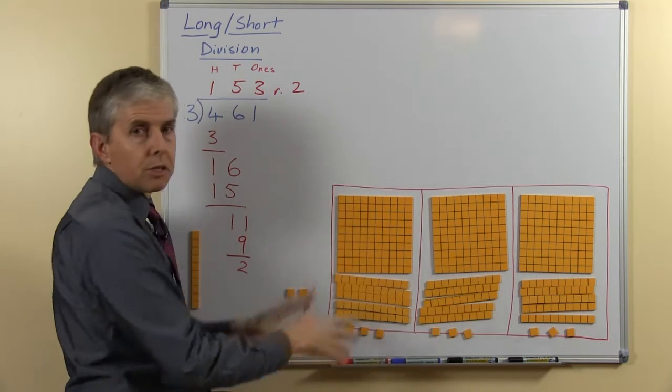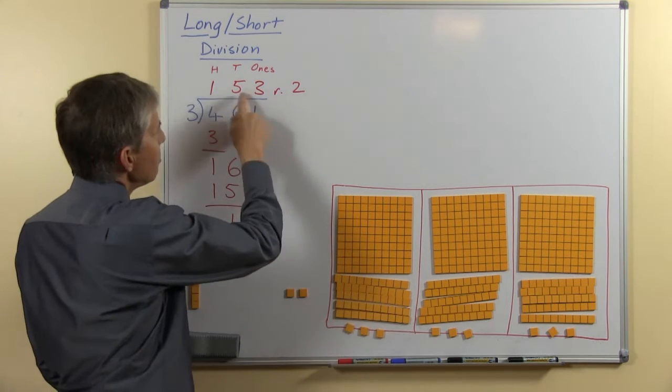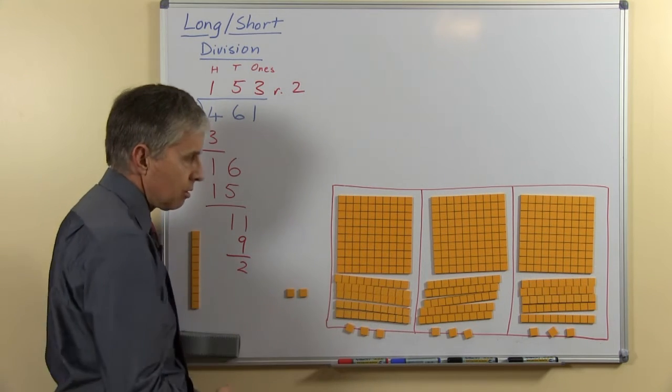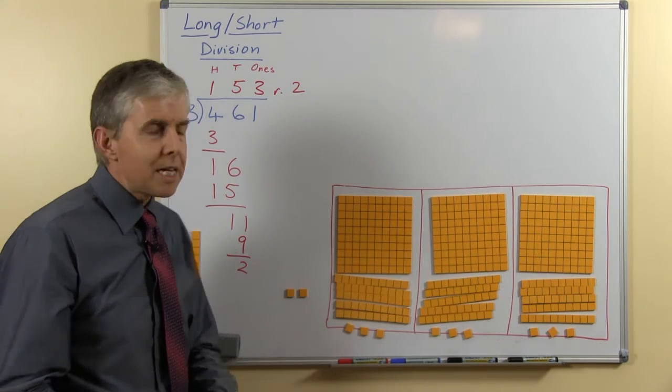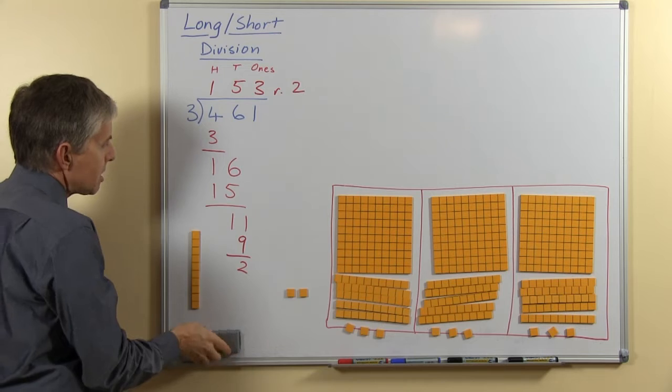So the blocks show us clearly, everybody has 100, 5 tens and 3 ones are 153 and here are our 2 left over. So that process, this written process here is called long division, where we write all the numbers underneath.